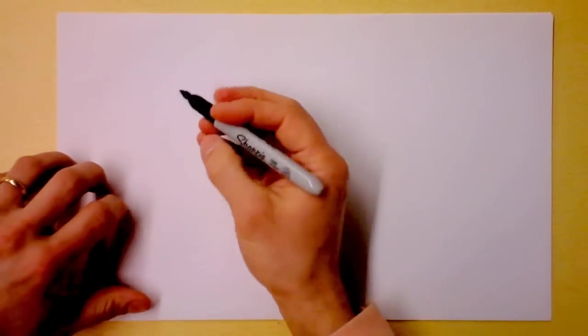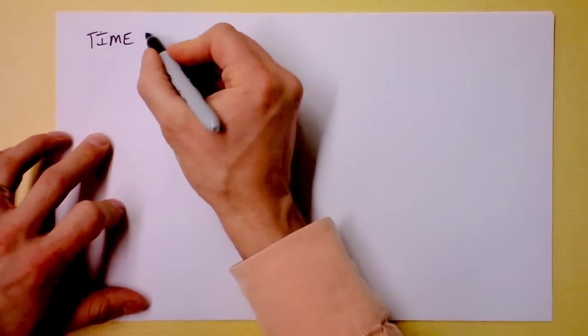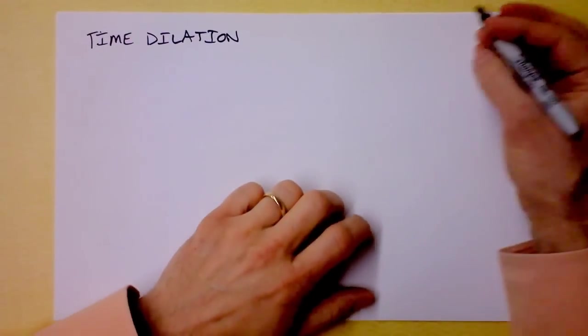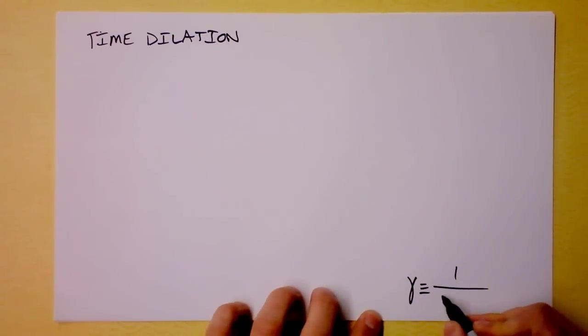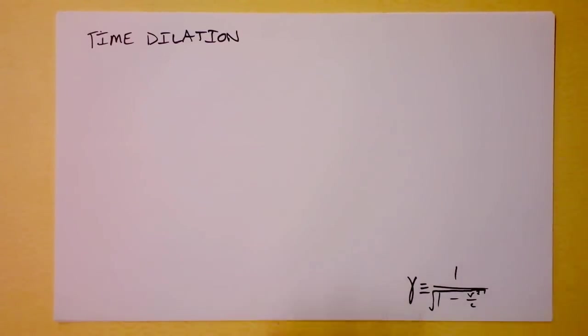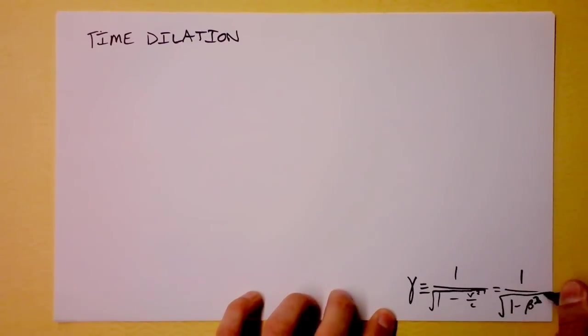I'm going to make a little summary of some things we know from special relativity. We have time dilation, and the thing about special relativity is that everything seems to be governed by this factor gamma. Gamma is 1 over the square root of 1 minus v-squared over c-squared, and we can also write it using beta — 1 over the square root of 1 minus beta-squared.